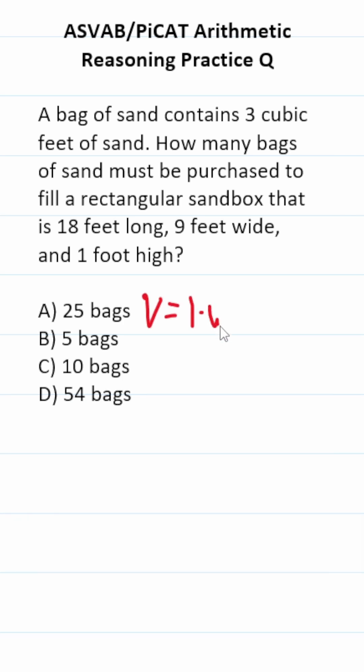So the first thing we have to do is find the volume of our sandbox. It's a rectangular prism, so it's going to be length times width times height. That's going to be 18 times 9 times 1.